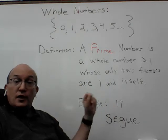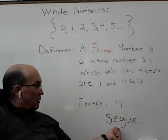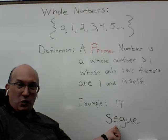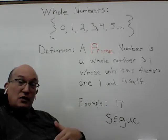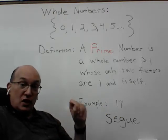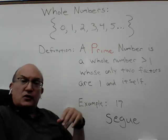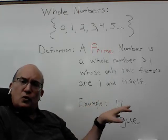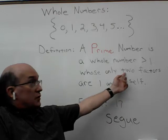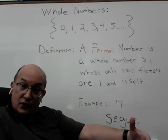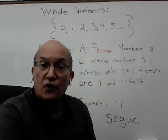17 is greater than one and its only two factors are one and itself, so it is what we call a prime number. And 17 has been the segue from the previous video about factors and multiples to this current video about prime numbers. We might logically ask: whole numbers greater than one — some of those are going to be prime because they only have factors of one and itself. But what about the other whole numbers? Do we have a name for those?